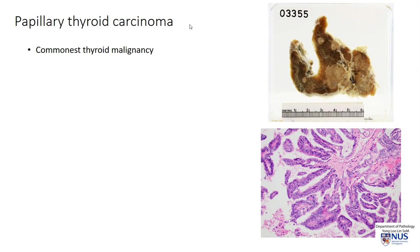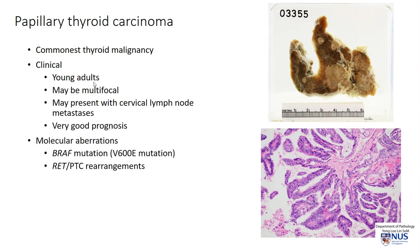Papillary thyroid carcinoma, or PTC, is the commonest thyroid malignancy. It tends to occur in young adults, and it's not infrequently multifocal, as you have seen in this case. It may also present with cervical lymph node metastases. It is important to know that the route of spread of PTC is actually via lymphatics, so when a diagnosis of PTC is made, it is also important to examine the cervical lymph nodes.